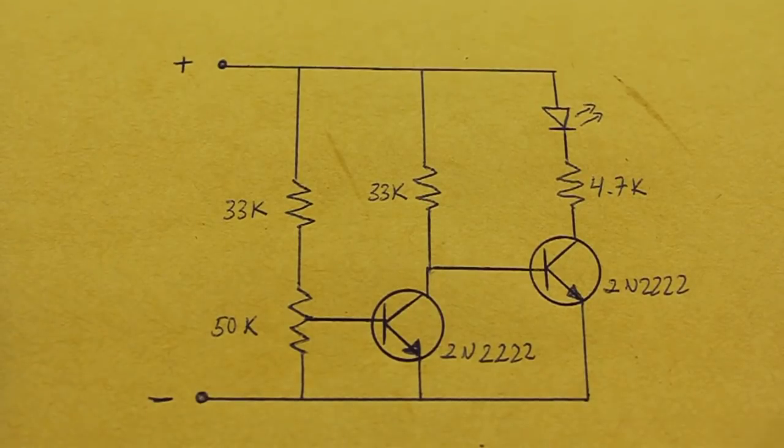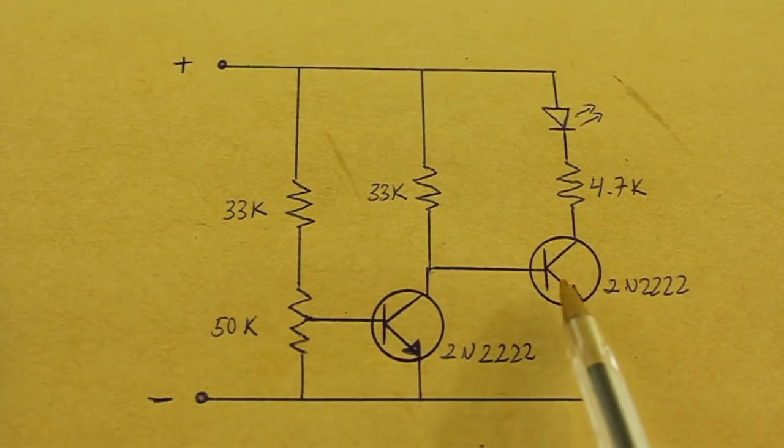However, if we add more resistance via the potentiometer, this transistor will turn on at a higher voltage than this other one.